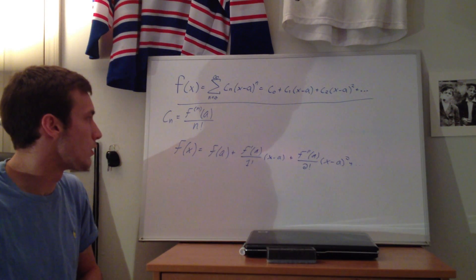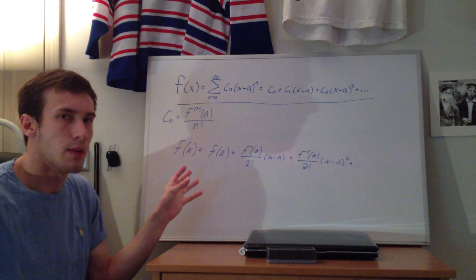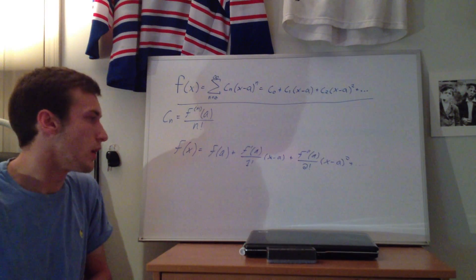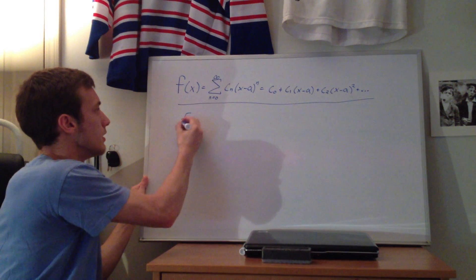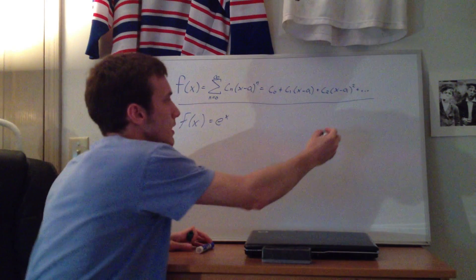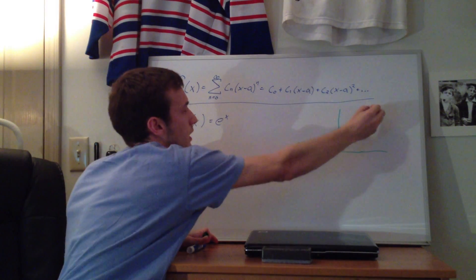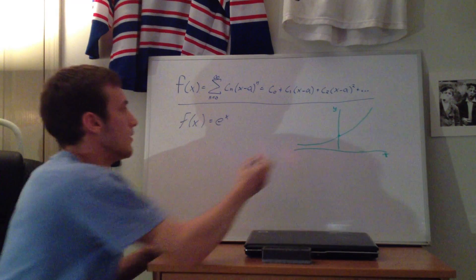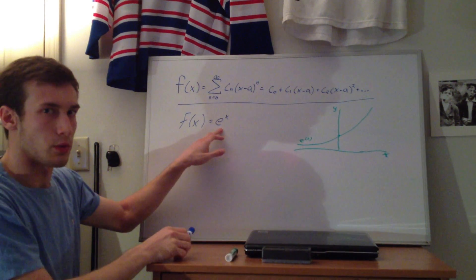Now let's go over an example. The reason you might use Taylor series is to express a function you might not be able to express analytically, making it easier to approximate functions to whatever order of accuracy you want. I'll use the function e to the x, because its derivatives are easy and it's a simple function to illustrate what's happening. We can draw e to the x on a graph with value 1 on the y-axis.